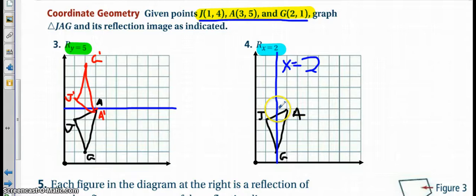So there's my a prime. J is one to the left down here, so it goes one to the right down here.